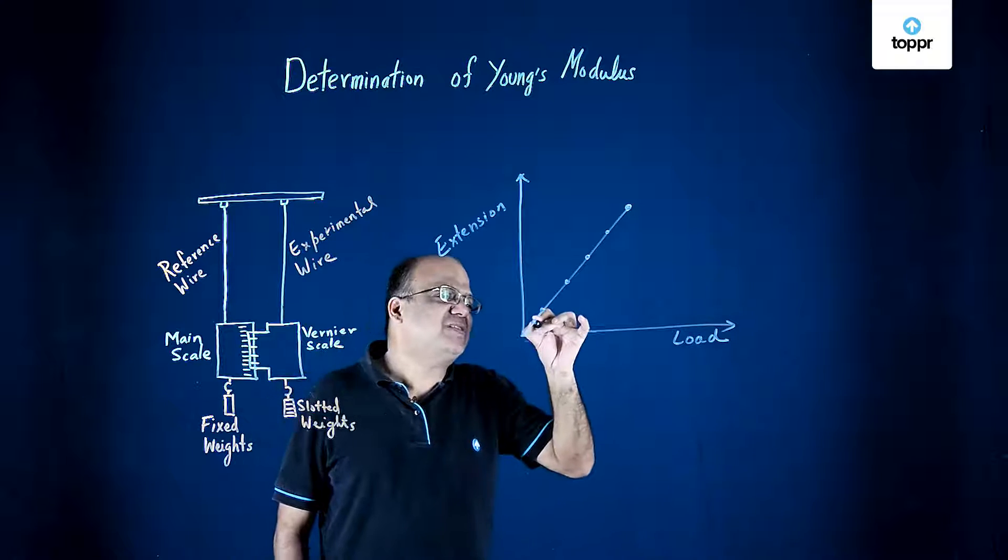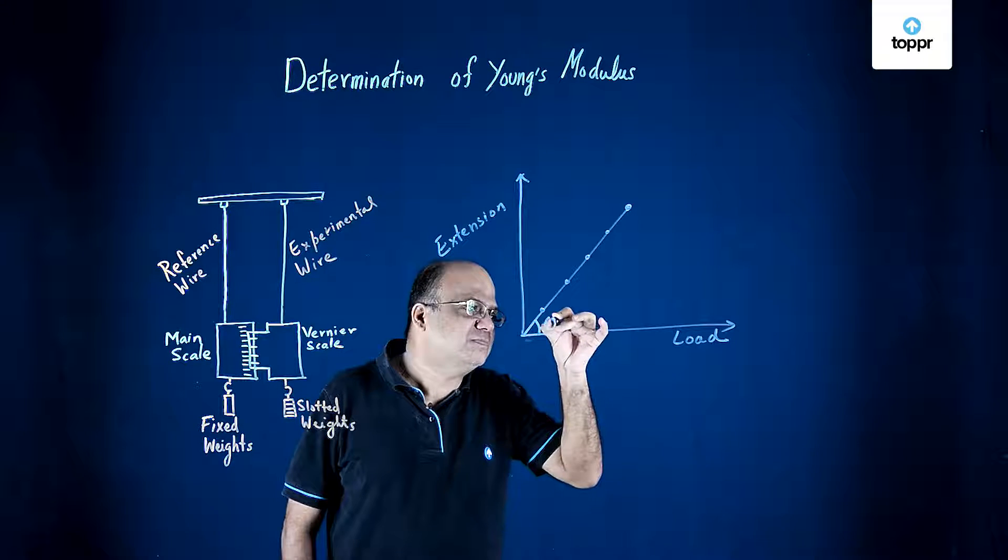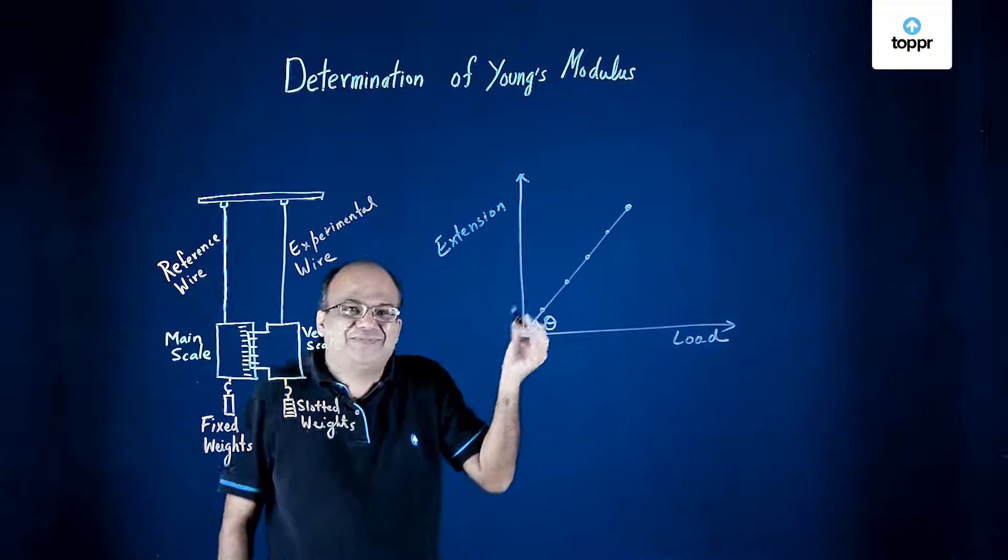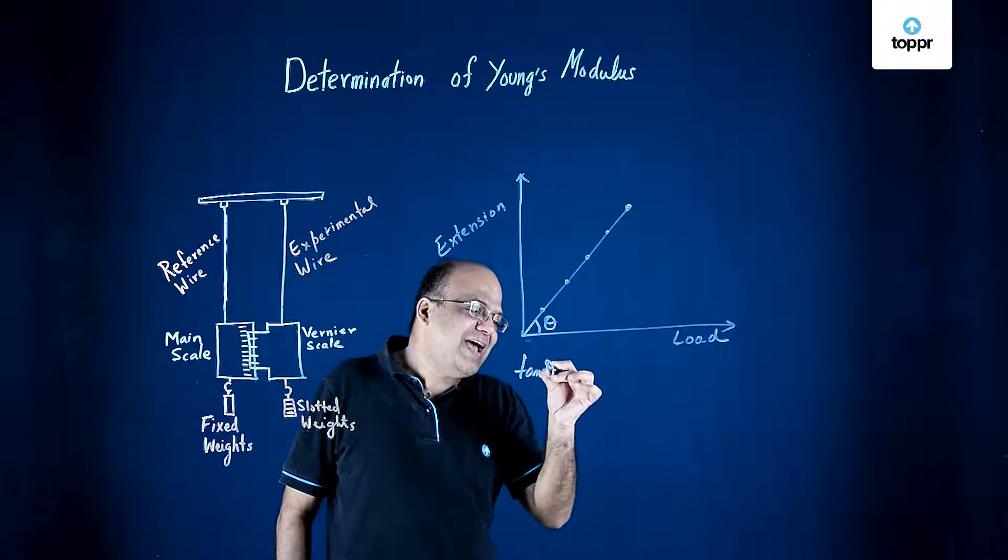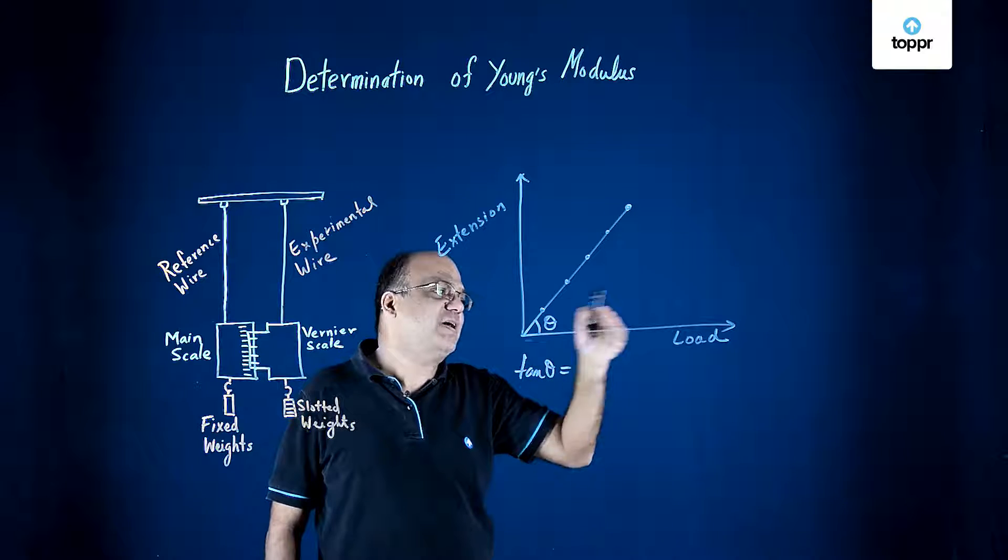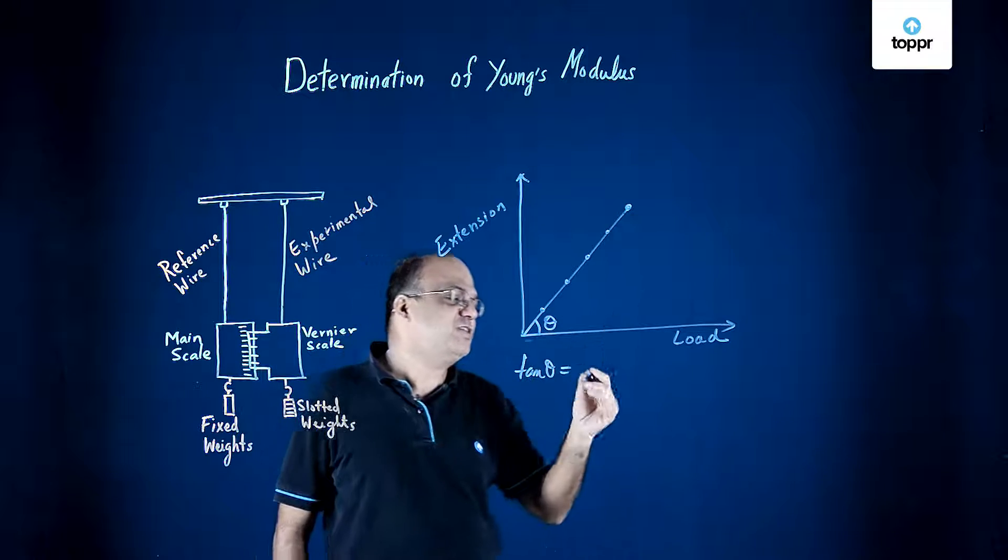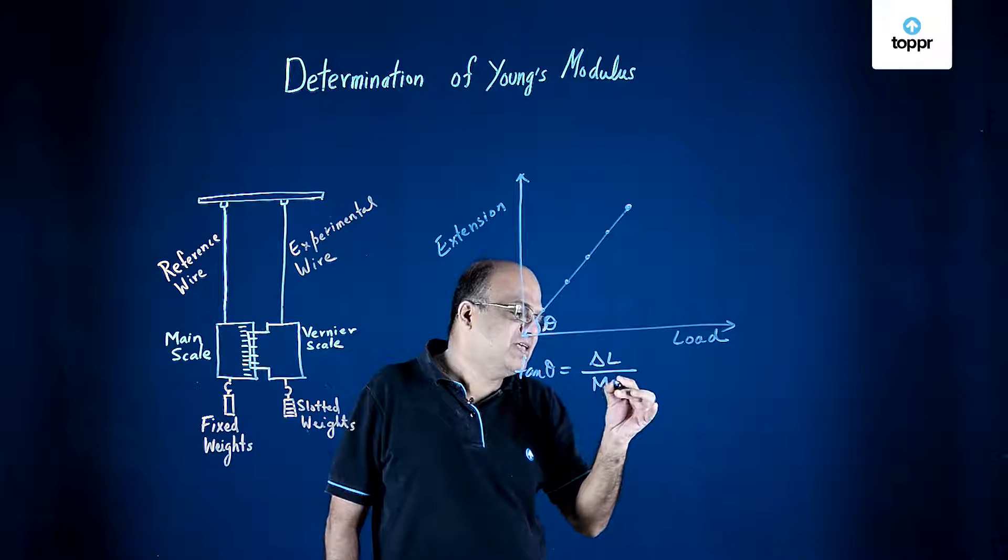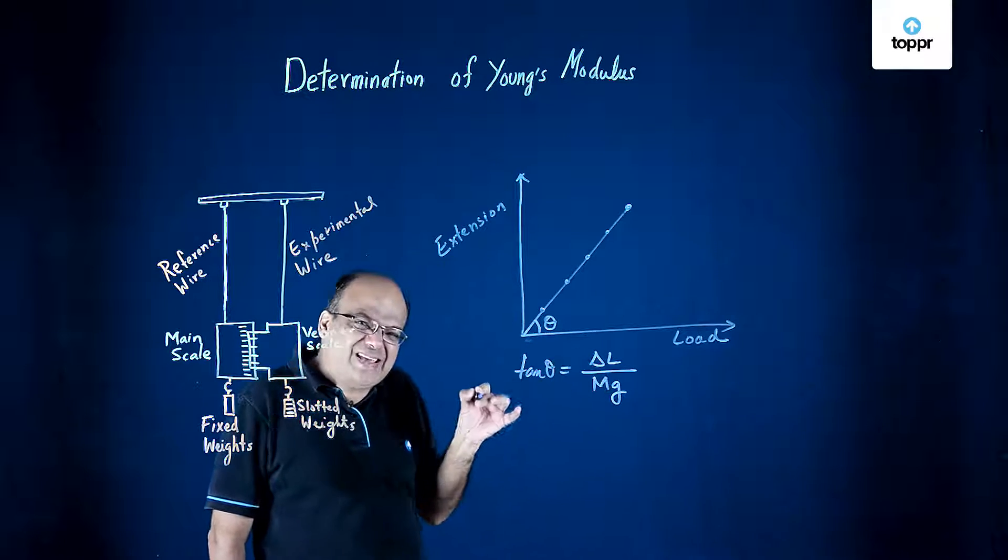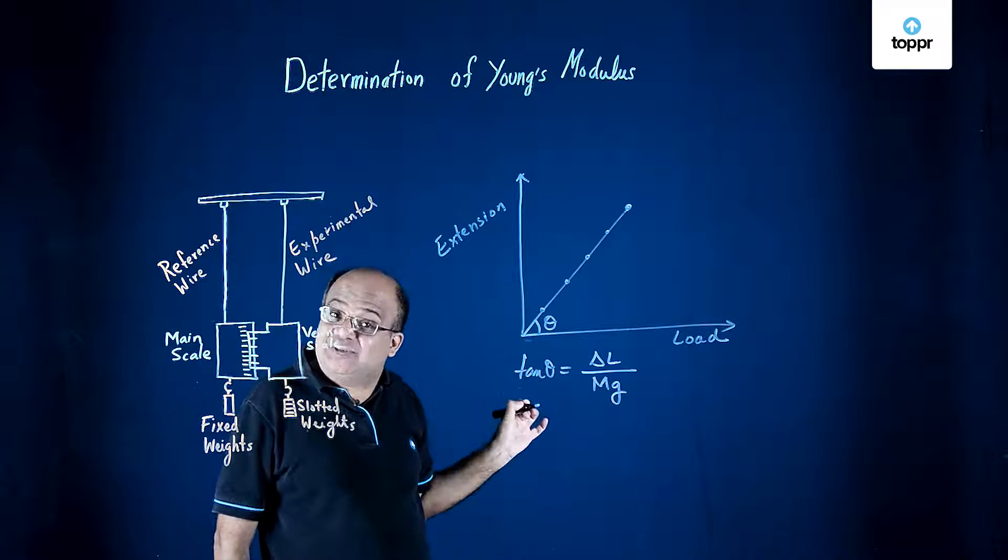After that we measure this angle theta from the graph. So what will be tan theta? Tan theta means opposite side by adjacent side. Opposite is extension that is delta L and the load is mg. So tan theta gives us delta L by mg.